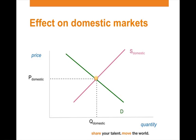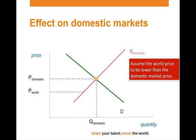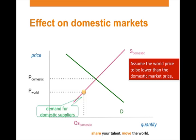What is the effect on domestic markets? Let us first assume that there is no trade — the law of supply and demand are applicable and the price is established on the domestic market. Now let us assume that the world price for a good is lower than the domestic price. That means consumers will purchase on the domestic market those goods that are priced up to the world price — this is the demand for domestic suppliers. From that point onwards, consumers will purchase their goods and services on the world market. This difference is what we call imports.